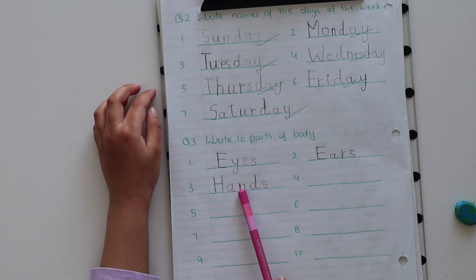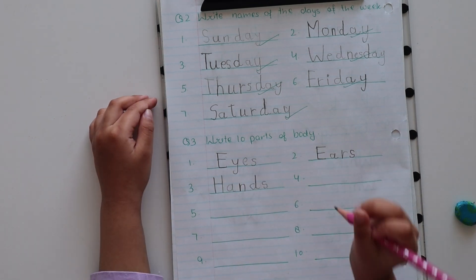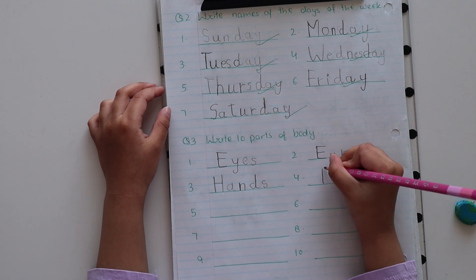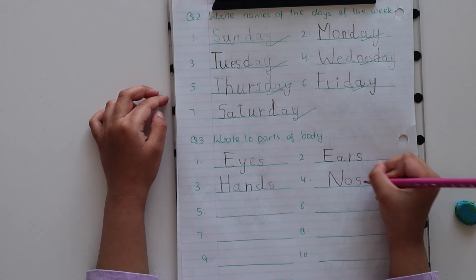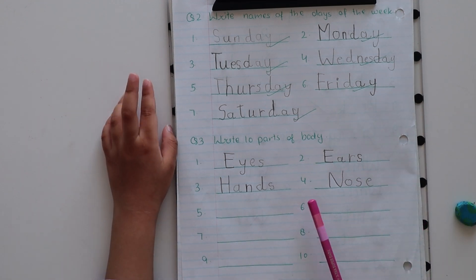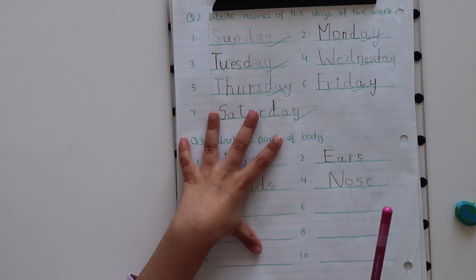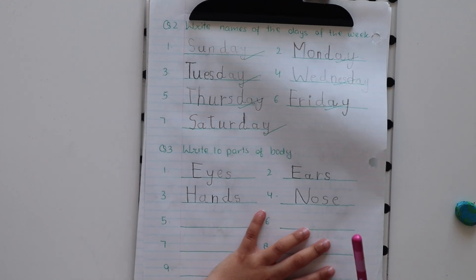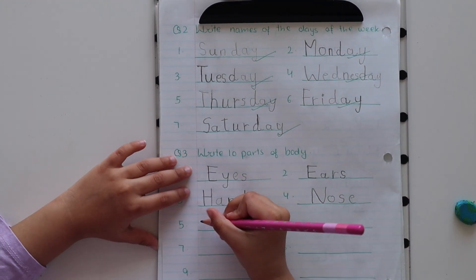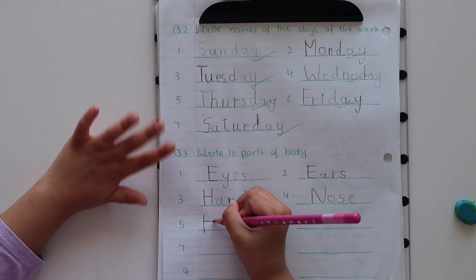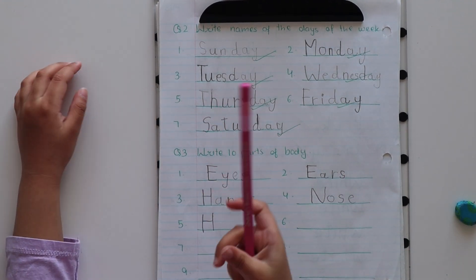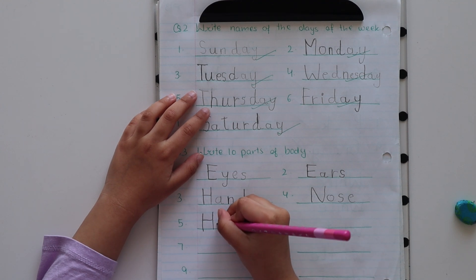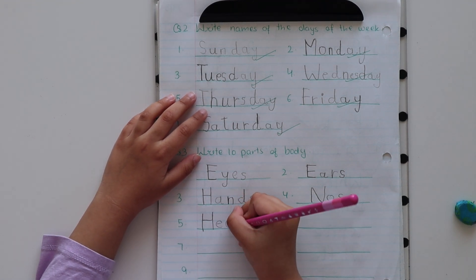Eyes. Ears. And this is nose. These are four body parts I wrote. For head we have one head. H-A-N-D.